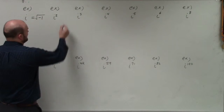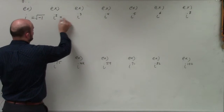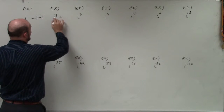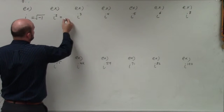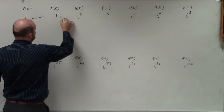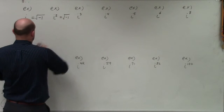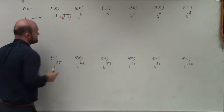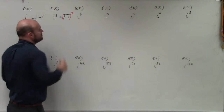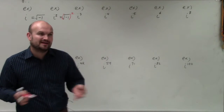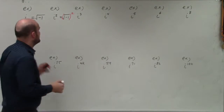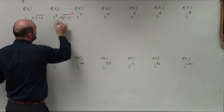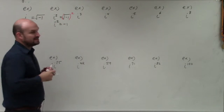Now, if I have i squared, basically what I have is the square root of negative 1 squared. The square root of negative 1 squared is just going to leave us with negative 1. So therefore, i squared equals negative 1.